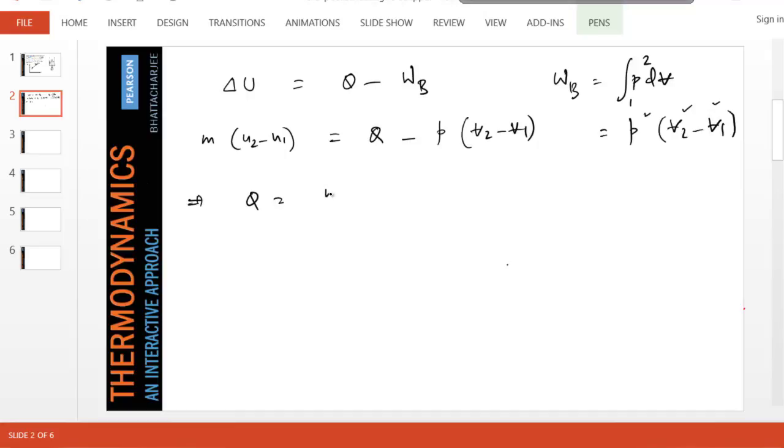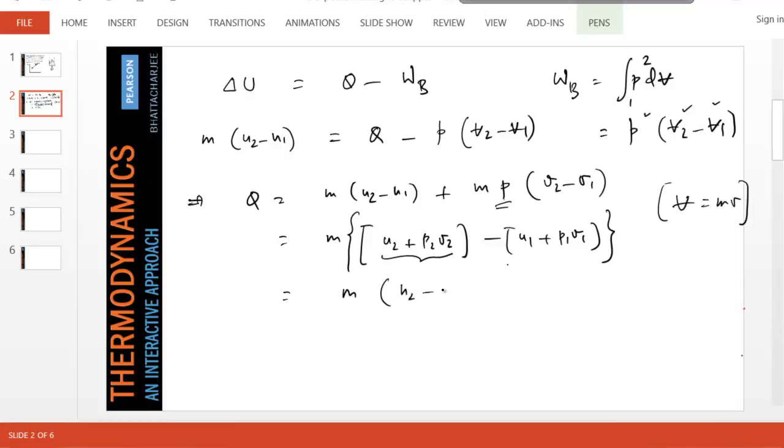Therefore Q can be written as M(U_2 - U_1) plus pressure, and let's bring the mass outside so we get V_2 minus V_1, because volume is mass times specific volume. If you take mass common and manipulate this equation, you can write this as U_2 + P_2*V_2 minus U_1 + P_1*V_1. Because pressure doesn't change in this problem, I can write it as P_1 or P_2. If you recall the definition of enthalpy, we end up in a simpler formula: Q equals M(H_2 - H_1). For the PG model, it's simply C_P times T_2 minus T_1.